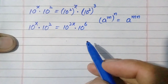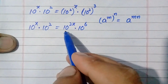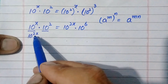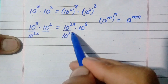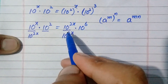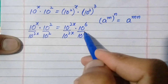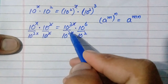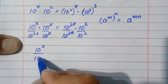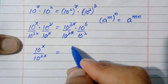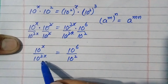To proceed further, we shift variable terms to one side and constant terms to the other. We divide both sides by 10 raised to power 2x and also divide both sides by 10 raised to power 2. These terms simplify with each other, and only 10 raised to power 2 will remain on one side.